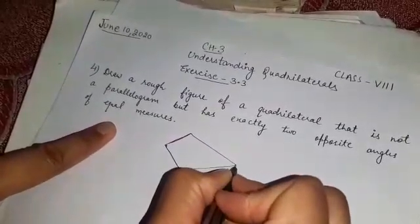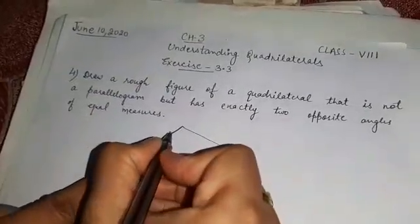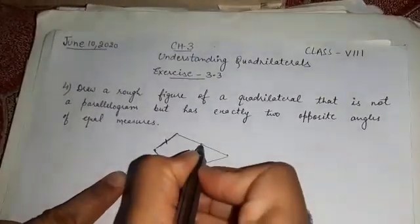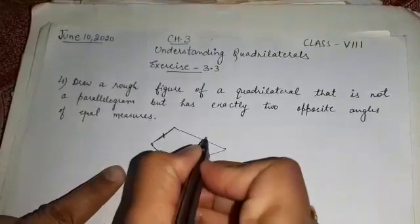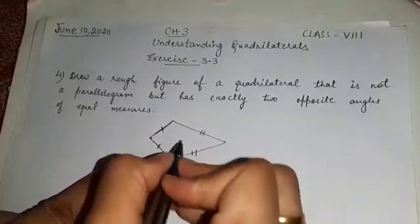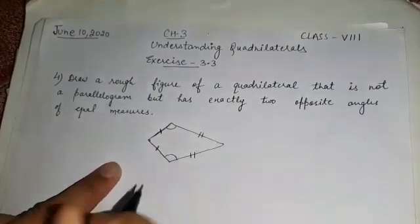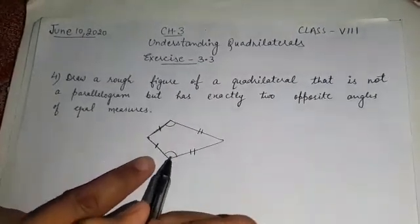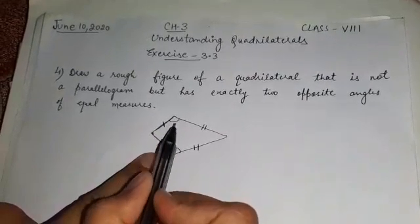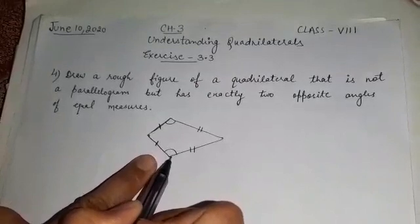This is how we can draw a kite. The properties are that adjacent sides are equal to each other — these two sides are equal and these two sides are equal. Second, these two angles have equal measure.